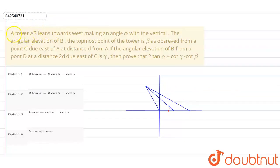So the question says, Tower AB leans towards west, making an angle alpha with the vertical. Let's draw this thing side by side while reading the question. I have already drawn the directions or you can say coordinate axis here.